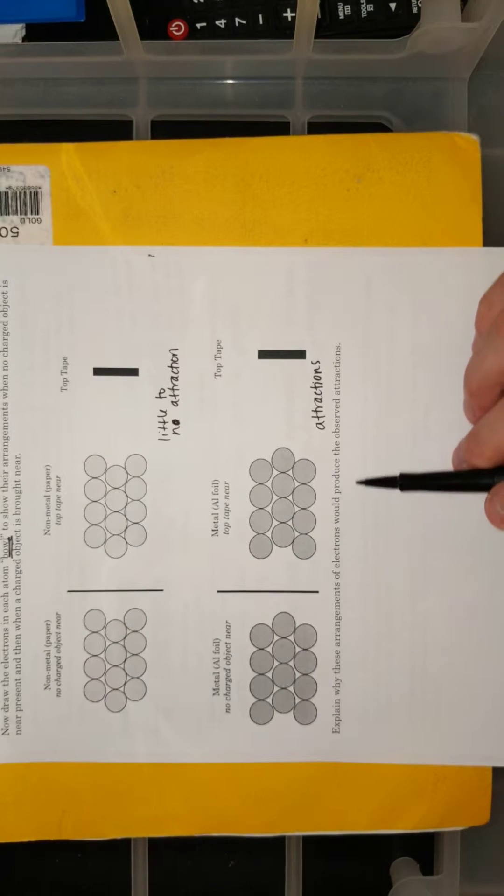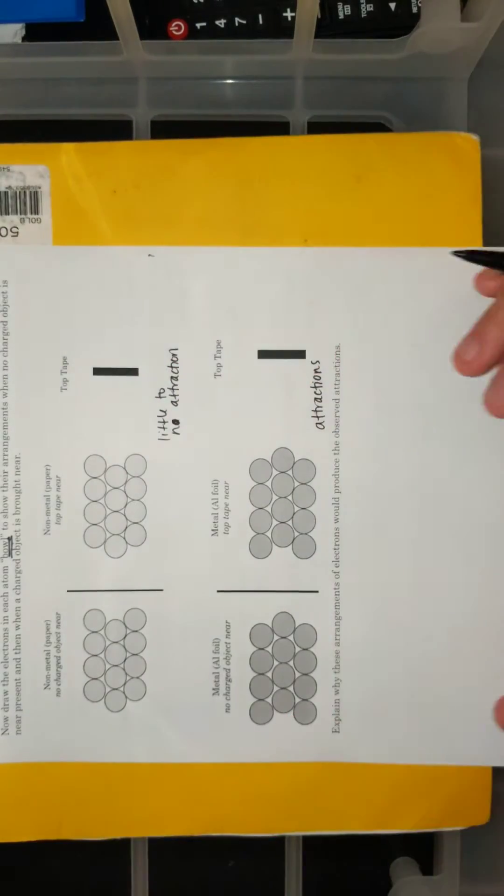Use this video to explain why these arrangements of electrons would produce the observed attractions. When you're done drawing in the electrons and answering the questions, tape or fold this into your notebook, and I'm going to check it on Monday. Hopefully this video walked you through at least half of what you're supposed to do. If you have any other questions or concerns, let me know and I can try and help you from afar.